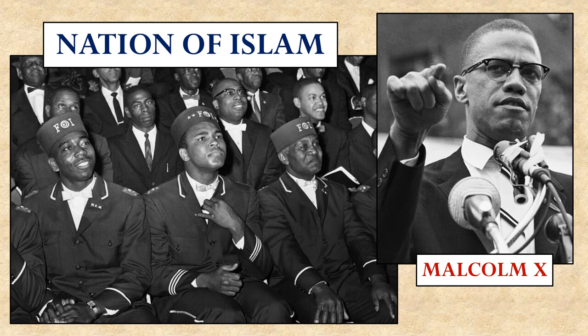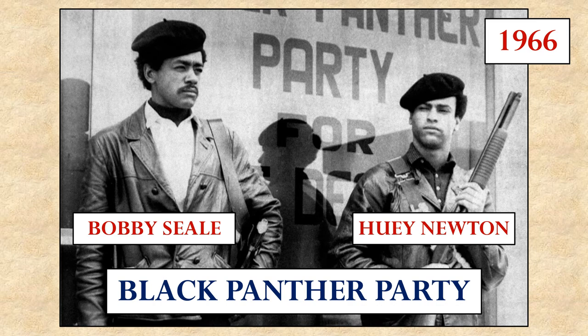Malcolm X was not the only one who saw a potential role for violence in the pursuit of black civil rights. Two men named Bobby Seale and Huey Newton established the Black Panther Party in 1966. While the Black Panther Party may have engaged in some good works, they were mostly known for their call to direct action and self-defense — believing that black communities could only be liberated from white power by becoming self-sufficient. Black Panthers became famous for walking around carrying military-style assault weapons, designed to protect themselves from the white power structure around them.